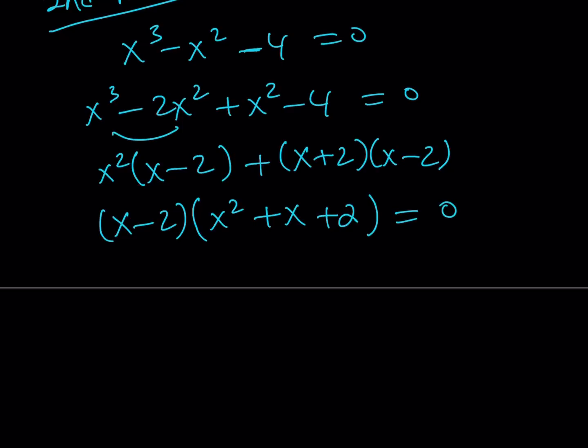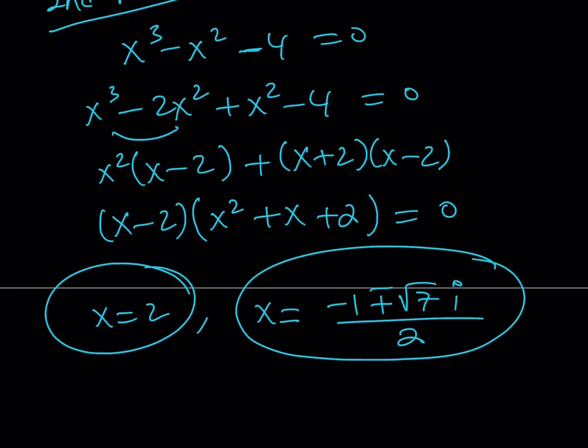And then we get x squared plus x plus 2 is equal to 0. And as before, if you solve this equation, you're going to get the exact same solutions. x equals 2 and x equals negative 1 plus minus square root of 7i divided by 2. So that gives us all the three solutions, two of them being complex conjugates. Great. So we got the same answer. That shouldn't be a surprise, right?